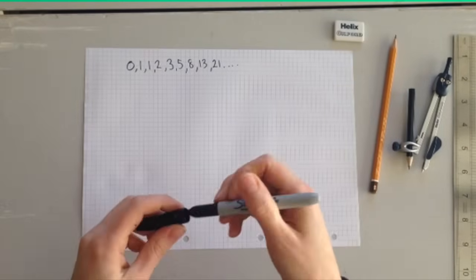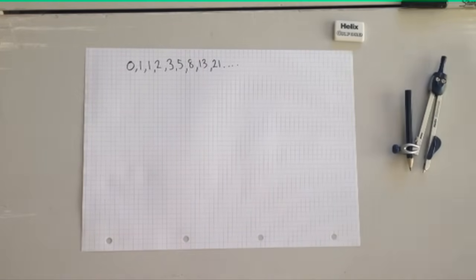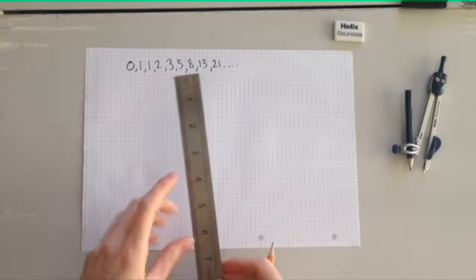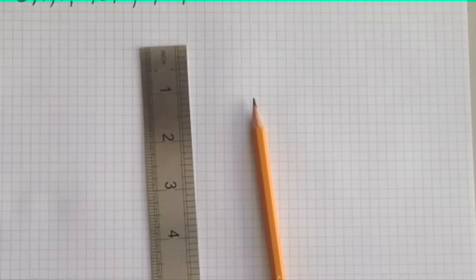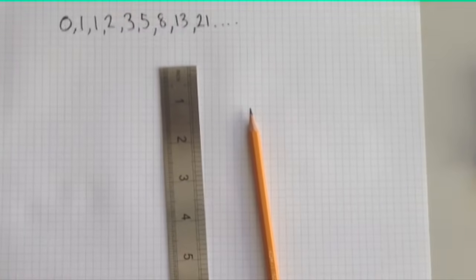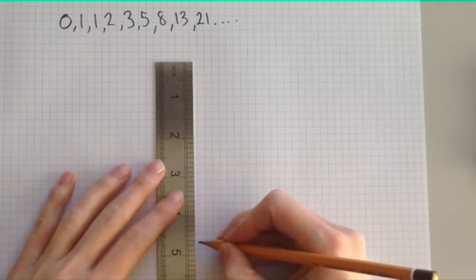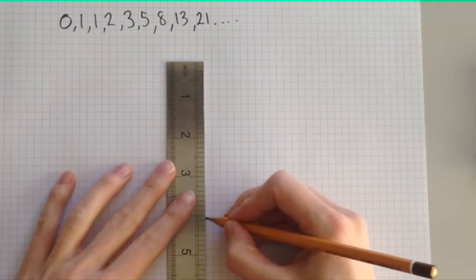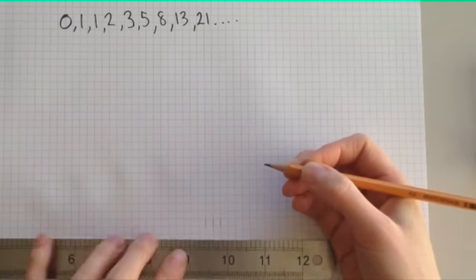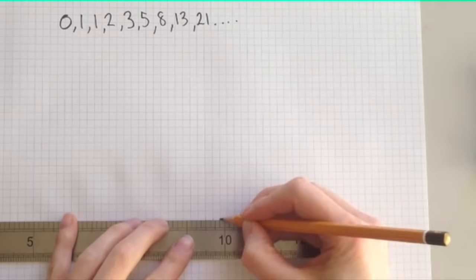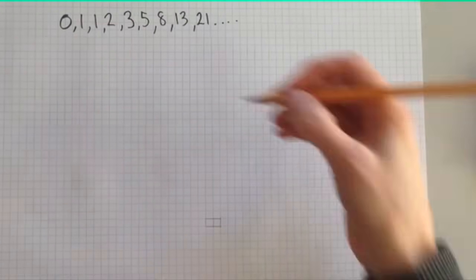So that's how to calculate the Fibonacci sequence, and we are going to draw this using some squared paper, a ruler and a compass. Let me zoom in a little bit so you can see closer what I'm going to do. So we're going to first of all draw the 1 and the 1 square. You've got to be quite accurate if you want the spiral to look really neat.